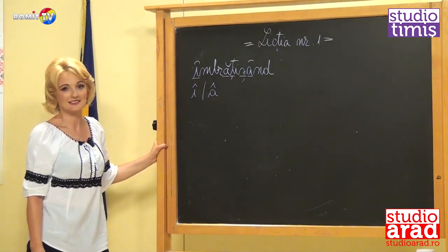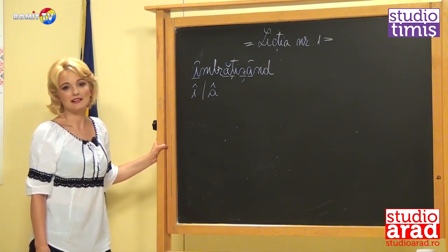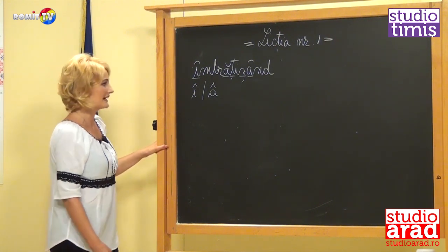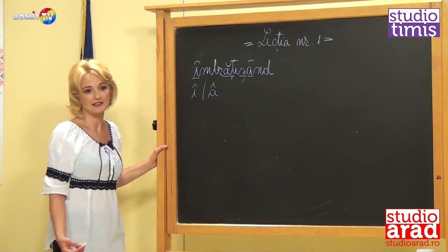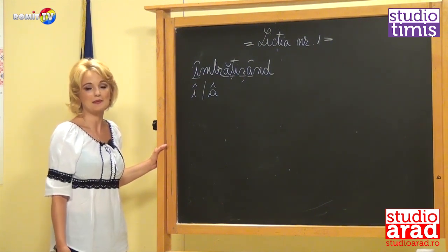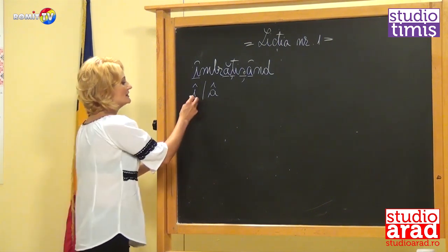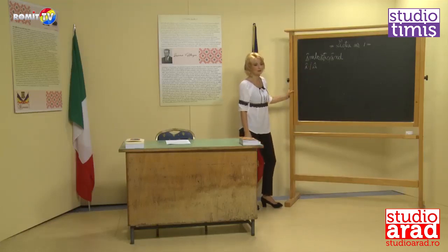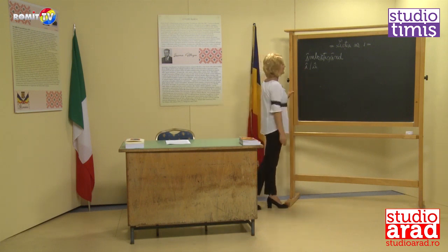Perhaps that is why Italians often have difficulty learning our language, while for us it is easier to learn Italian, because our vocal cords are more developed and we are capable of pronouncing more sounds. So we said the sound Î, which we write in two ways. We will discuss a little later which rule guides our choice of Î from I or Î from A.